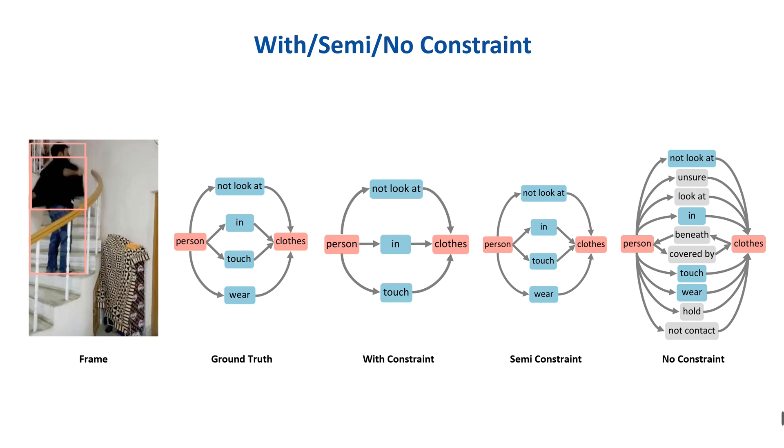There are two typical strategies to generate a scene graph with the inferred relation distribution in previous works: with constraint and no constraint. With constraint only allows each subject-object pair to have at most one predicate, where no constraint allows multiple guesses. With constraint is incompetent for multi-label task. When using no constraint, tolerant multi-guesses cause wrong information.